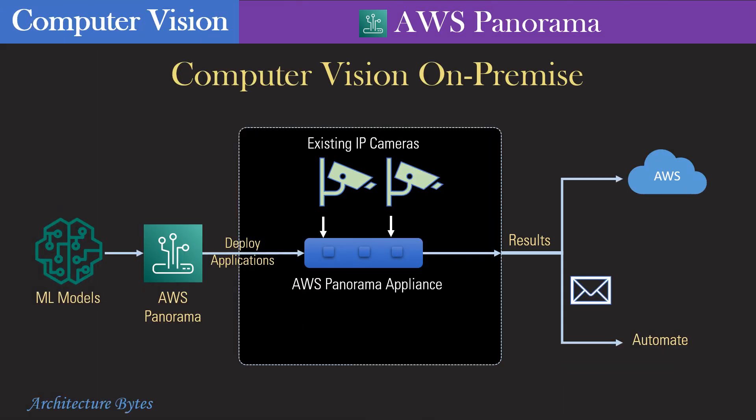AWS Panorama brings computer vision to your factory premises. Using AWS Panorama devices in your local area network, you can add computer vision to your existing on-premise cameras. Therefore, you can process video feeds at the edge, operate with limited bandwidth, and make predictions locally with high accuracy.